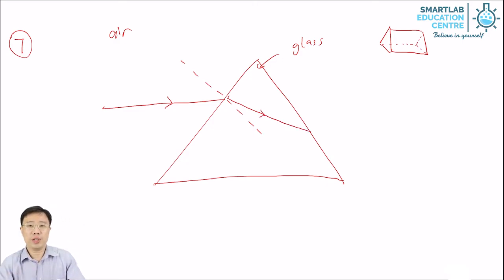For lower secondary size, you are not expected to calculate the angles. Now, light will travel straight as long as it is in the same medium. So in the glass, you travel straight.